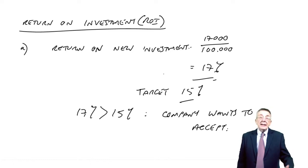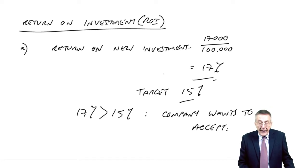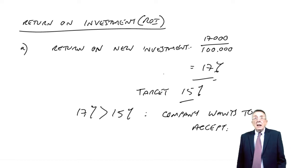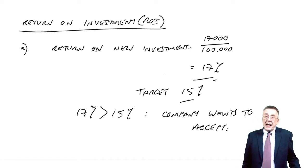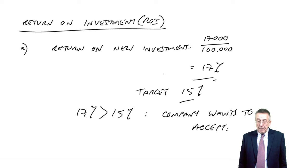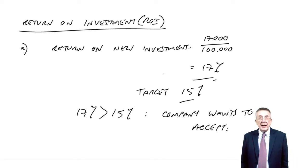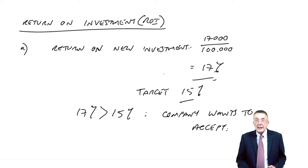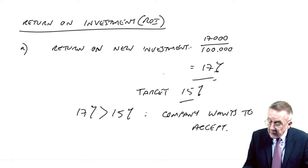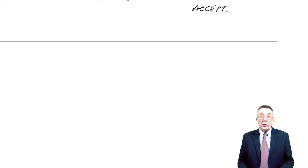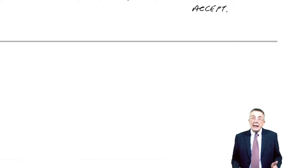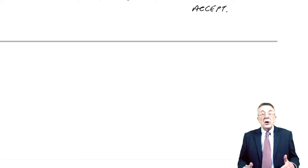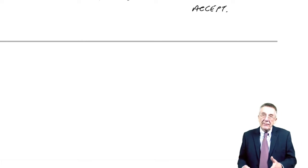Except, of course, if we've given the manager autonomy and it's an investment division, I can't just tell him he must accept this new investment — that's taking away autonomy. He's making the decision himself. So I have to make sure that the way I'm going to measure his performance, and he knows how his performance is being measured, makes him want to do the investment.